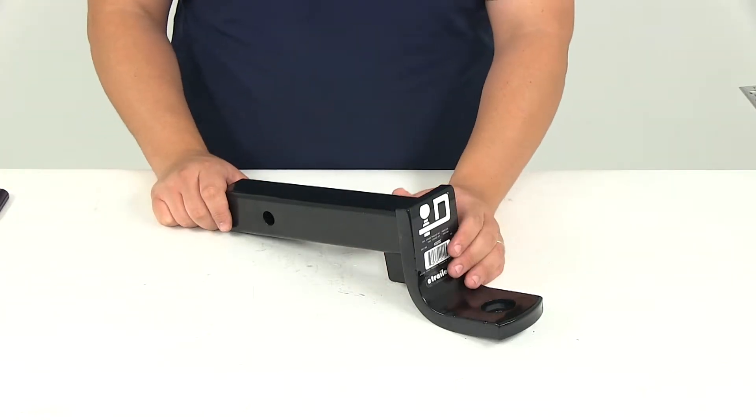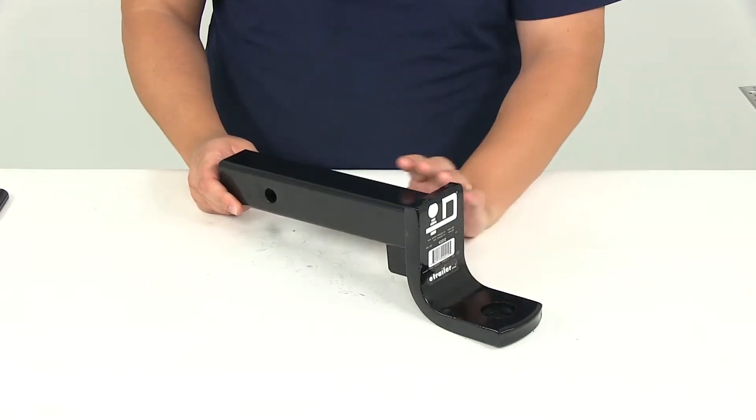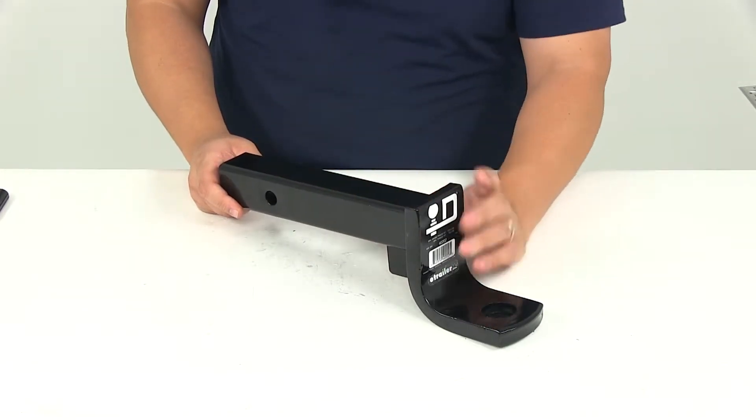Today we'll be reviewing part number 40202. This is the draw-tight ball mount rated at 10,000 pounds. It is designed to fit a 2 inch by 2 inch trailer hitch receiver.